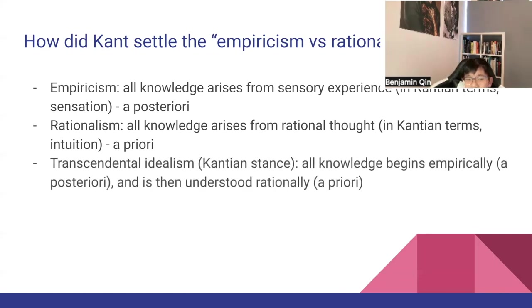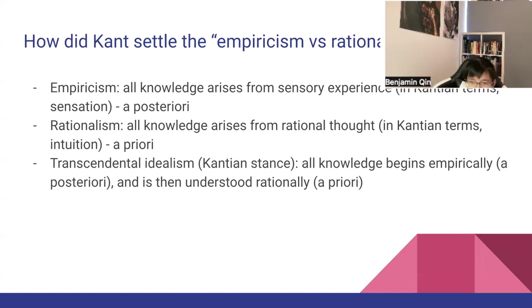Kant's view was something called transcendental idealism, which is the view that all knowledge begins empirically but is then understood rationally. This reduces the binary opposition between empiricism and rationalism, which Kant thought was quite limiting. He thought both aspects could be synthesized together into transcendental idealism. It's also worth noting that transcendental idealism is often used as an encompassing term for all of Kantian philosophy, not just this particular view.